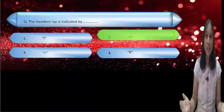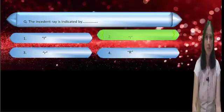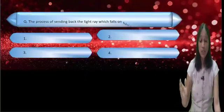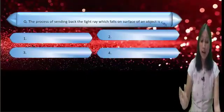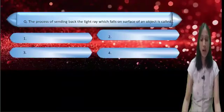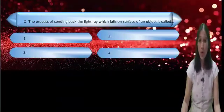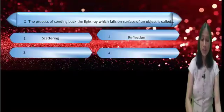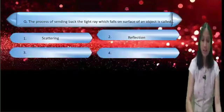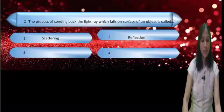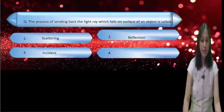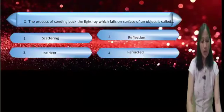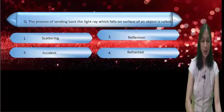The correct answer is small i. The next question is: the process of sending back the light ray which falls on the surface of an object is called — option one: scattering, option two: reflection, option three: incident, option four: refracted.